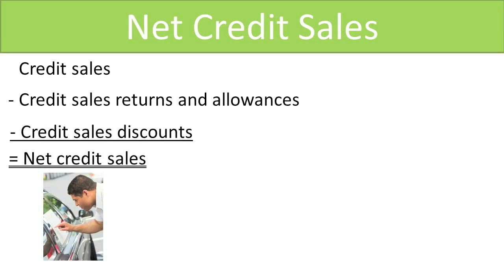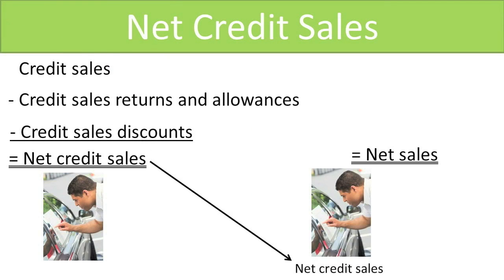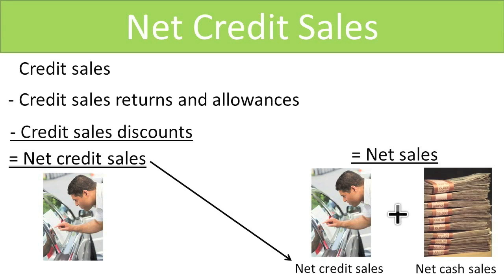Having said that, many users will use the net sales figure directly off the income statement to compute the AR turnover ratio, because the net credit sales figure is not readily available. One drawback to using net sales is that although it does include the net of all sales on account, it also includes the net of all cash sales, which can inflate the AR turnover ratio. Just make sure that when you compare the AR turnover ratio of different companies, you ensure that you use the same numerator, whether it be net credit sales or net sales.